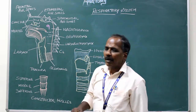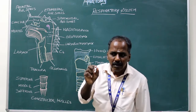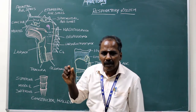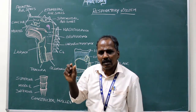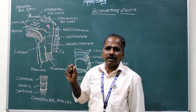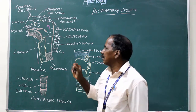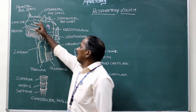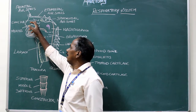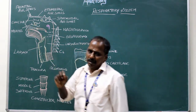Ethmoidal air sinus: It is divided into three groups — anterior ethmoidal air sinuses, middle ethmoidal air sinuses, and posterior ethmoidal air sinuses. The ethmoidal air sinuses drain into the superior and middle meatuses.